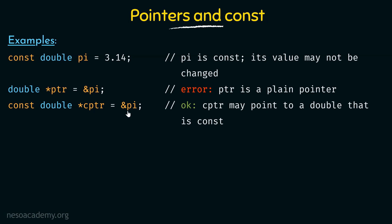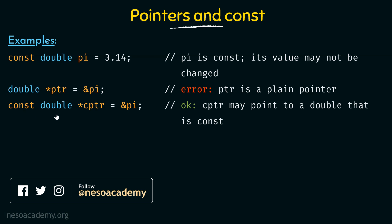Here is the correct way of doing it. We declare a pointer called CPTR of type double with the const keyword, which says that CPTR is a pointer that can point to an object of type constant double. So here we can store the address of pi, which is a constant double type. CPTR may point to a double that is a constant. This is the way you have to declare the pointer if you want to store the address of a constant type.